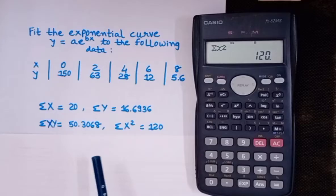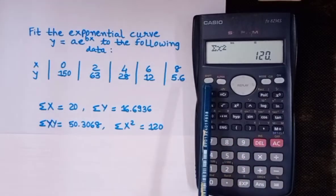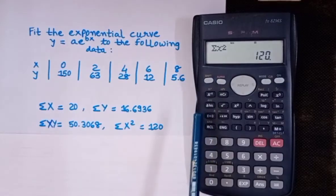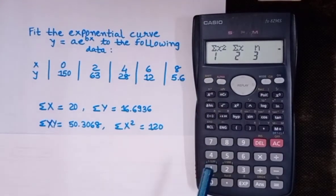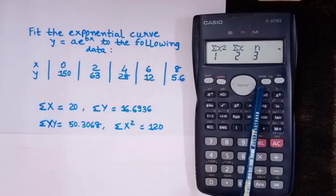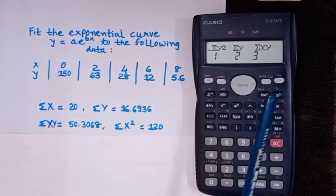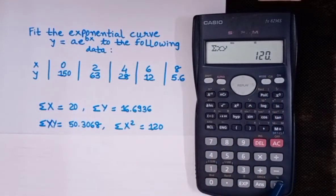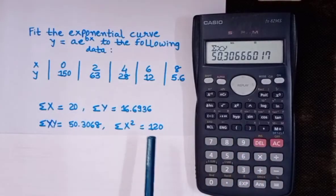Same way you can find out sigma xy. Press shift, then 1, and from here press next, then 3, and equal to. Sigma xy is 50.3068.